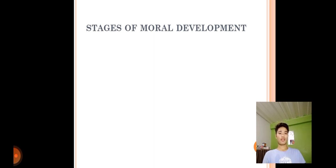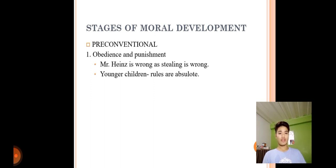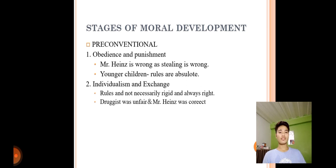The first level is pre-conventional, which has two stages. The first stage is obedience and punishment — for example, Heinz stealing is wrong; younger children see rules as absolute. The second stage is individualism and exchange — rules are not absolute, and rewards matter; all that is right is based on self-interest. Some may judge that the law was unfair and that Heinz was correct.